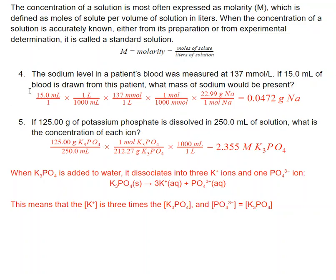I'm going to start with that 15 milliliters and convert that into liters by dividing by 1000. So this is my molarity, which is 137 millimole per liter. I'm converting the millimoles into regular moles here. And then I'm using my molar mass of sodium to convert moles of sodium into grams of sodium.